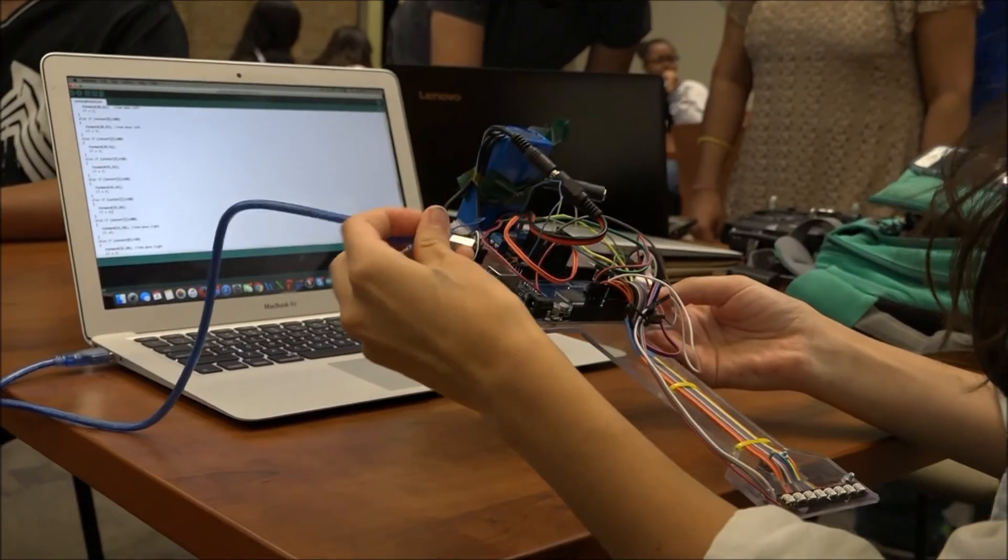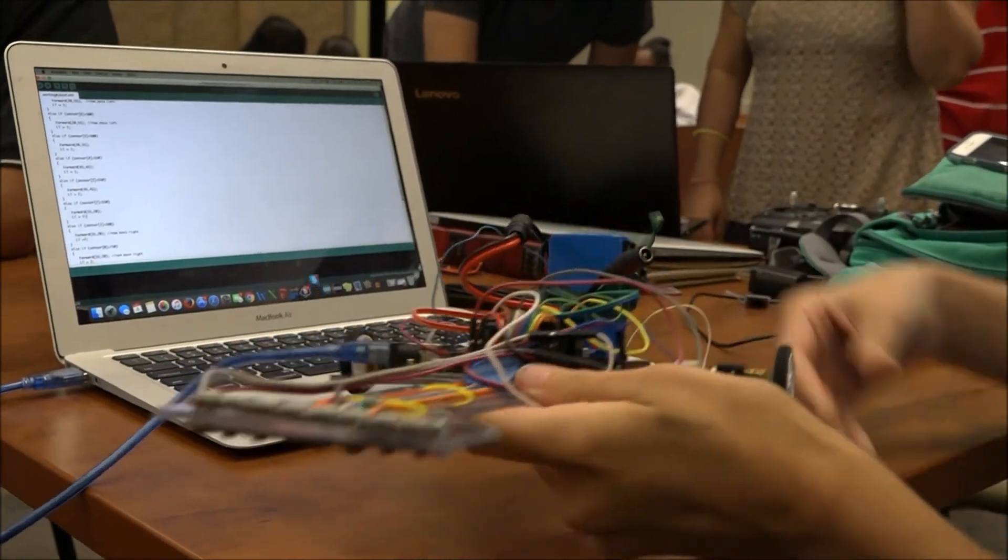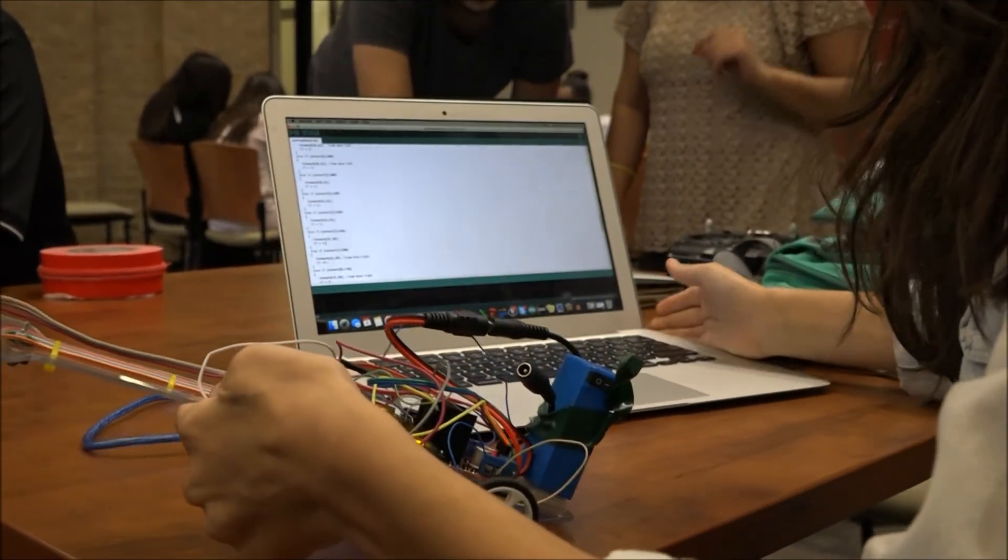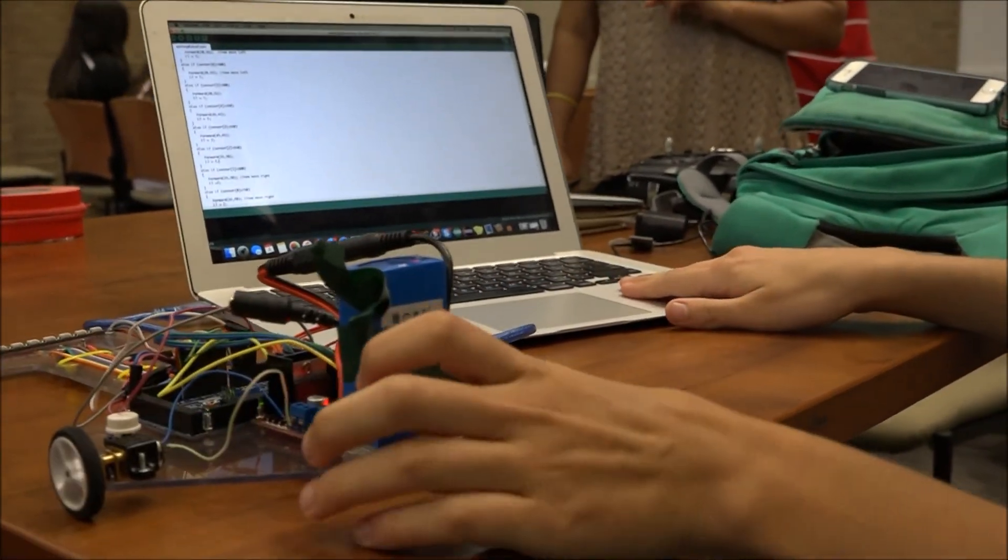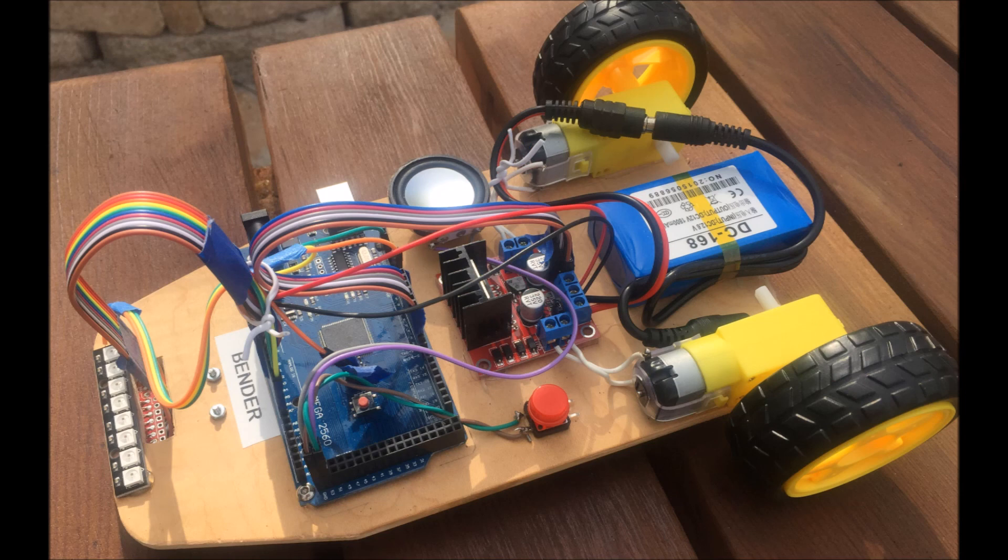You can hot glue most of the components to the platform. The caster needs to be screwed in. I also screwed in the Arduino because it was coming off when I would plug and unplug the cable. Surprisingly, hot glue has held the motors in place. If you build a really cool one, then please send me a picture. Let's go. Here we go.